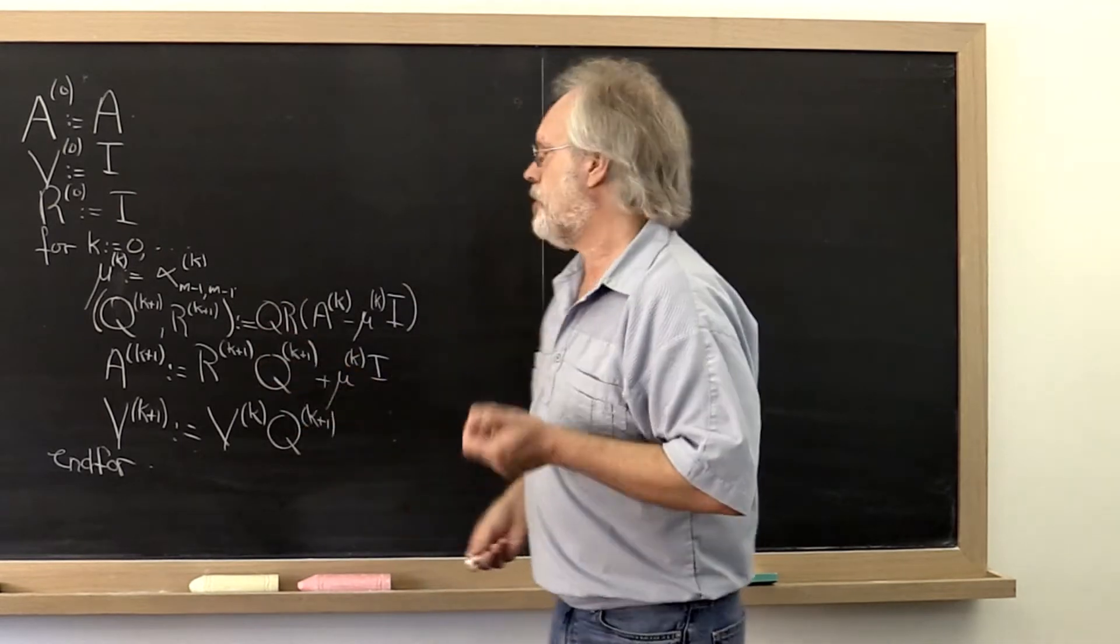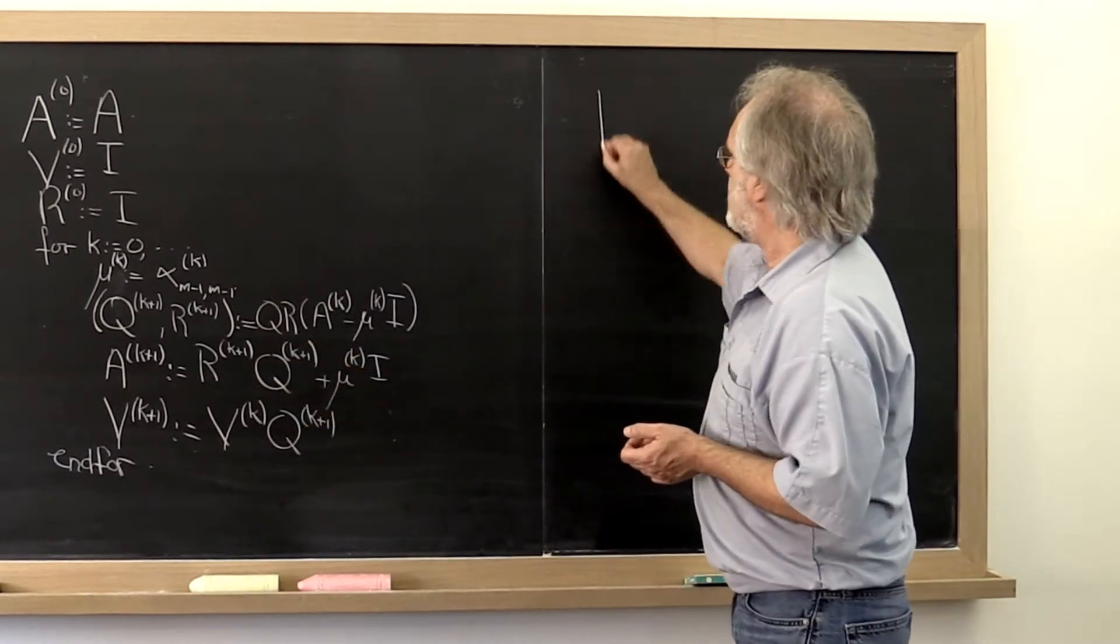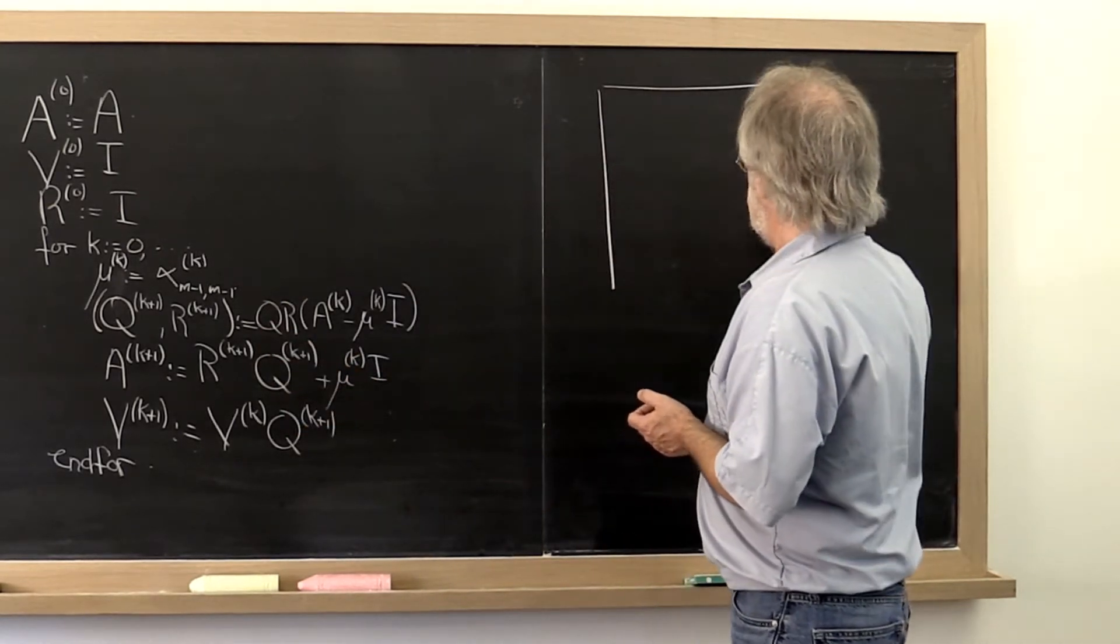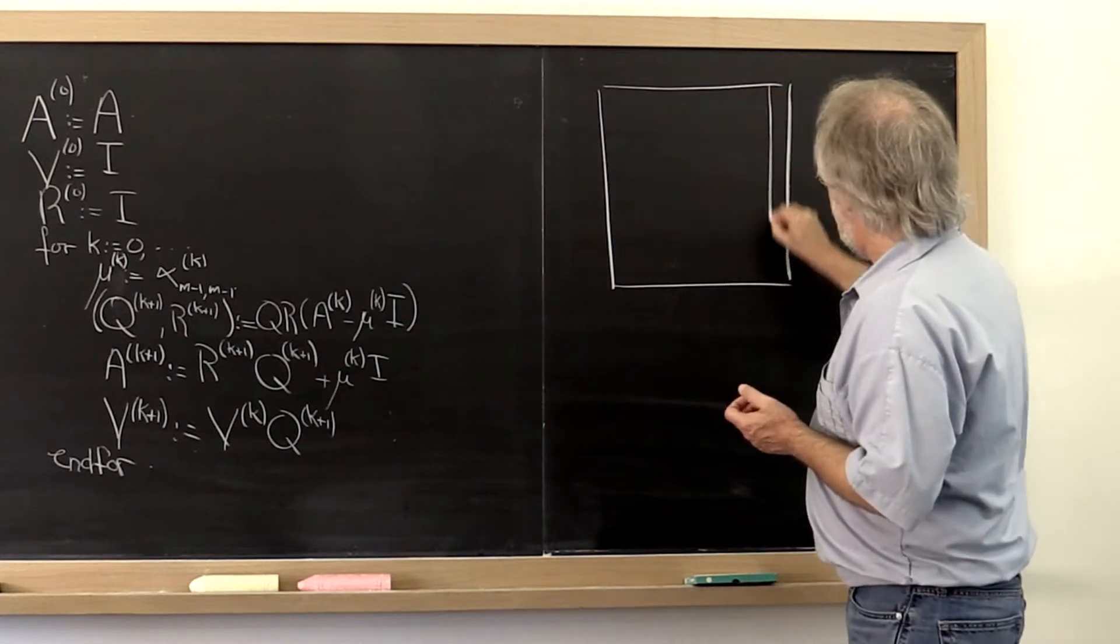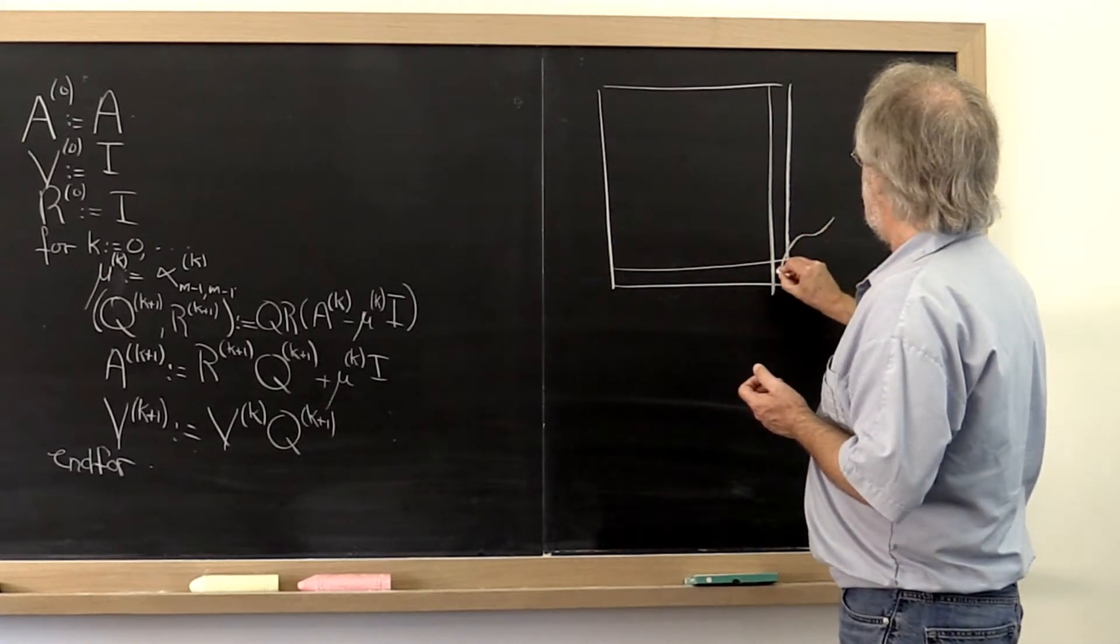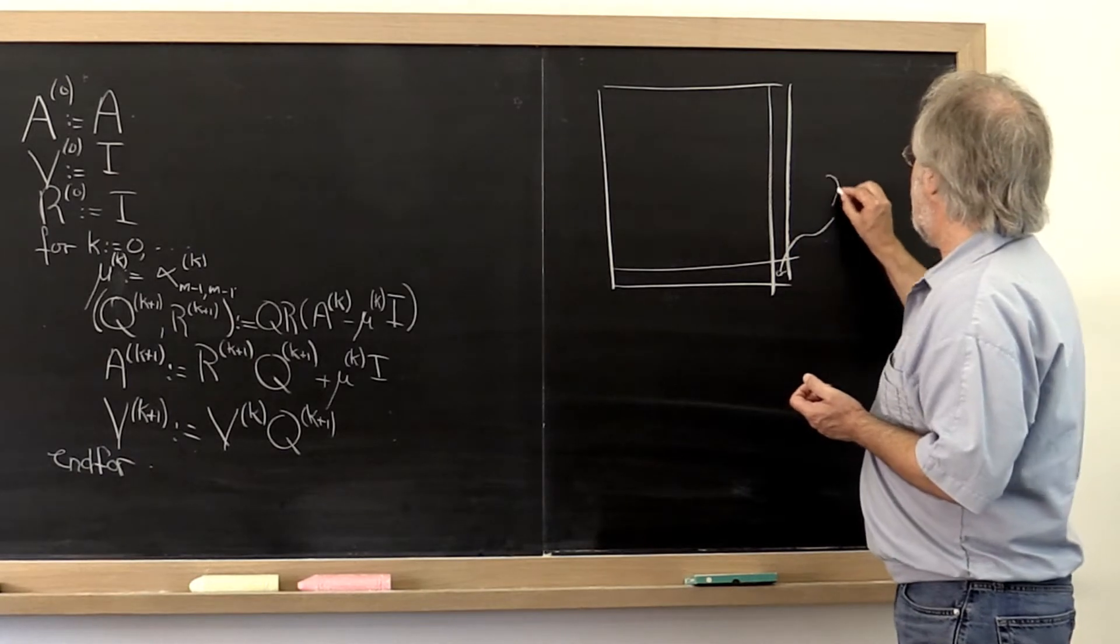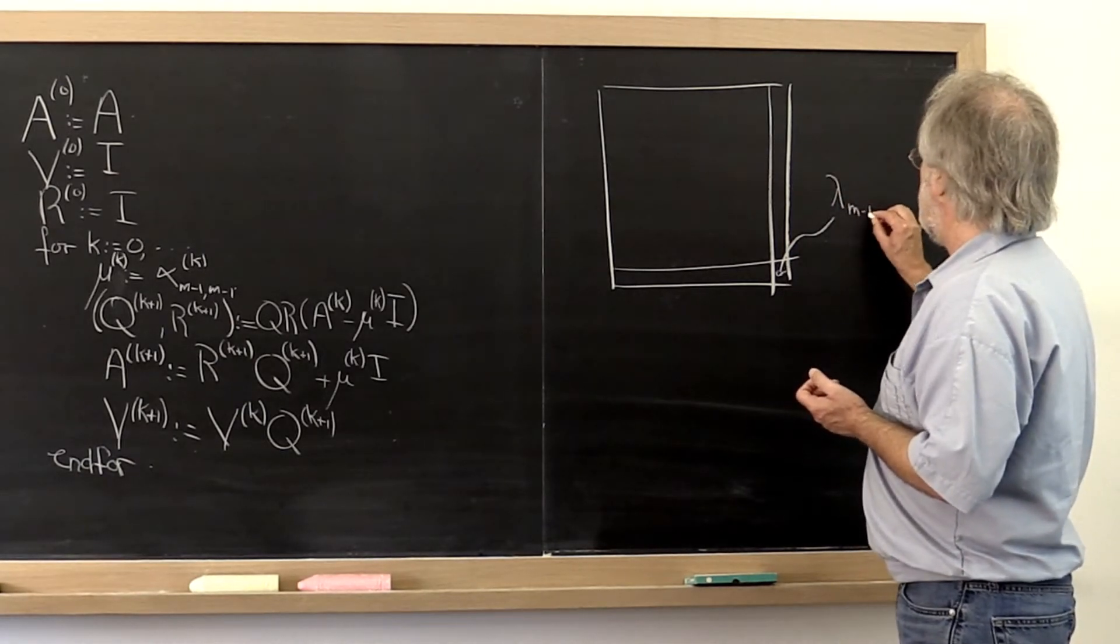If everything is converging correctly, then what we expect to happen to this matrix is that this last entry right here ends up converging to the eigenvalue that is smallest in magnitude.